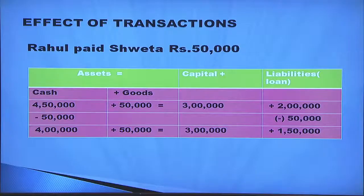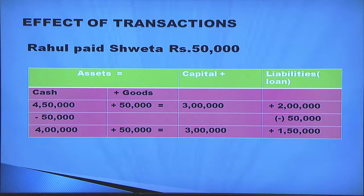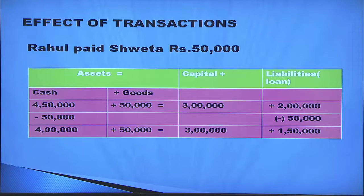Rahul paid Shweta rupees 50,000. Rahul had taken a loan, so the loan of rupees 50,000 is paid. Cash is going from the business — minus 50,000 in the cash column — and the loan has been reduced by rupees 50,000, so minus 50,000 in the liability column. The new accounting equation is cash four lakh plus goods 50,000 equals capital three lakh plus liabilities one lakh 50,000.